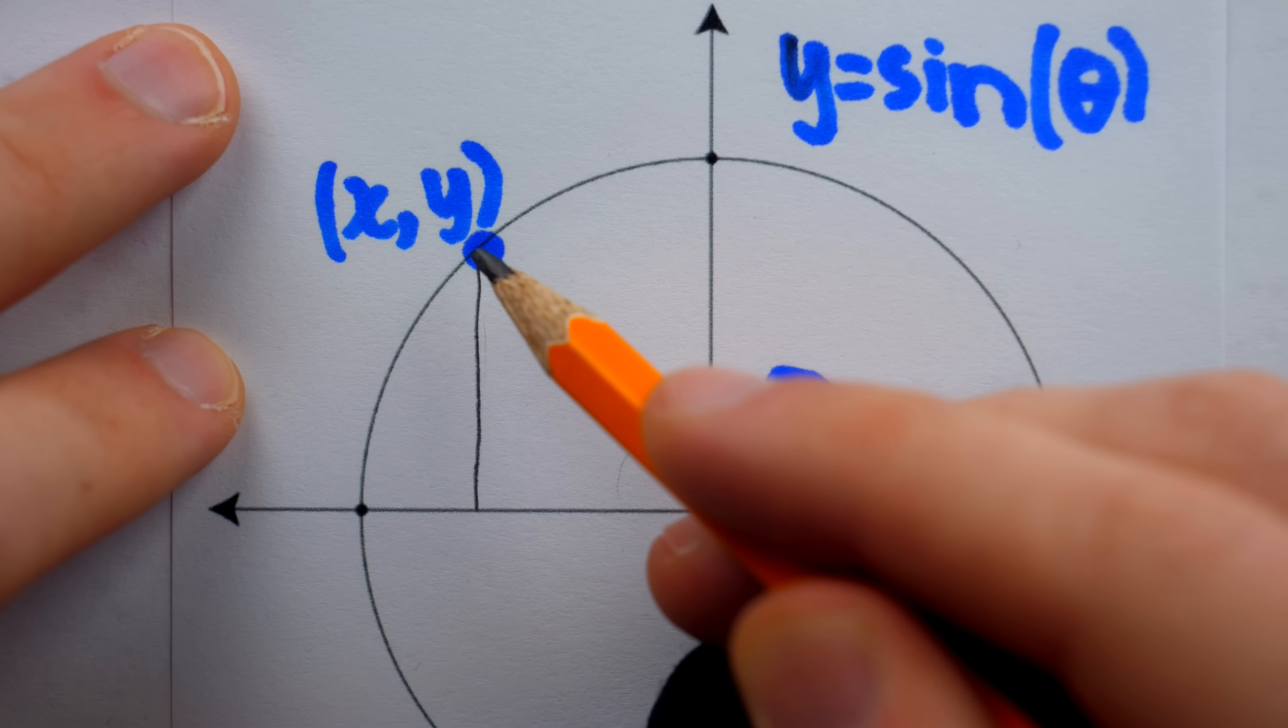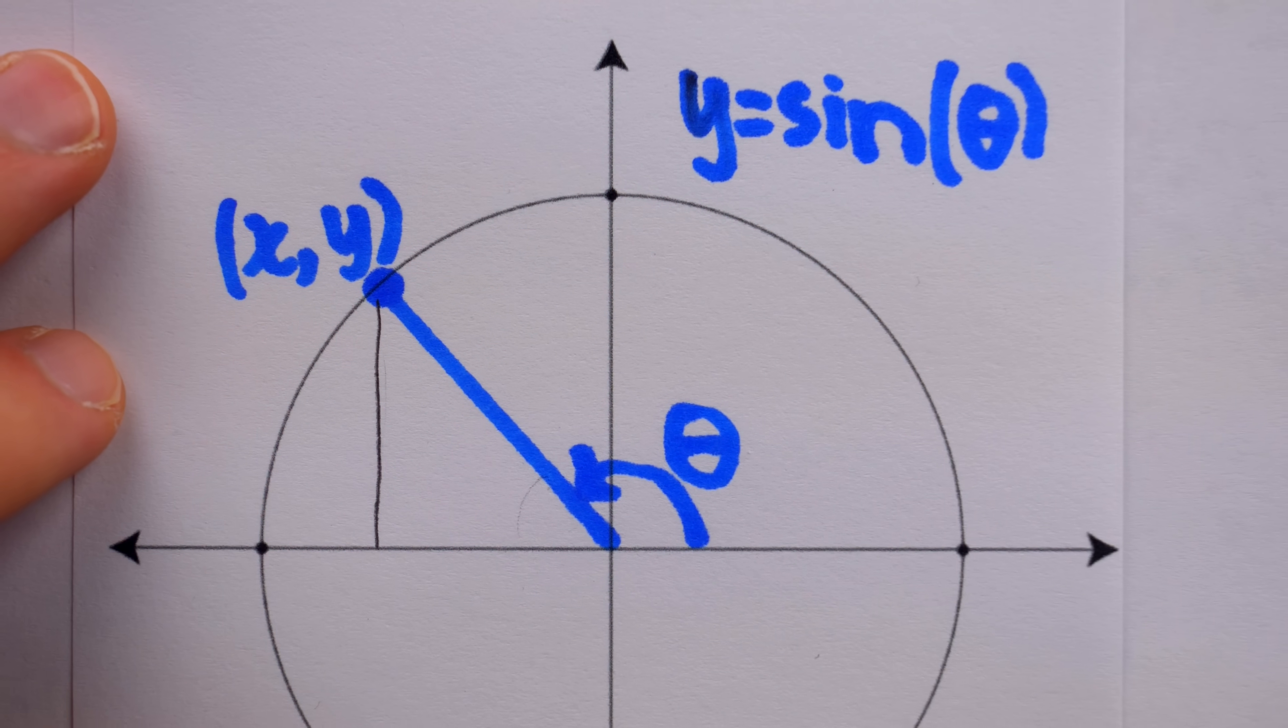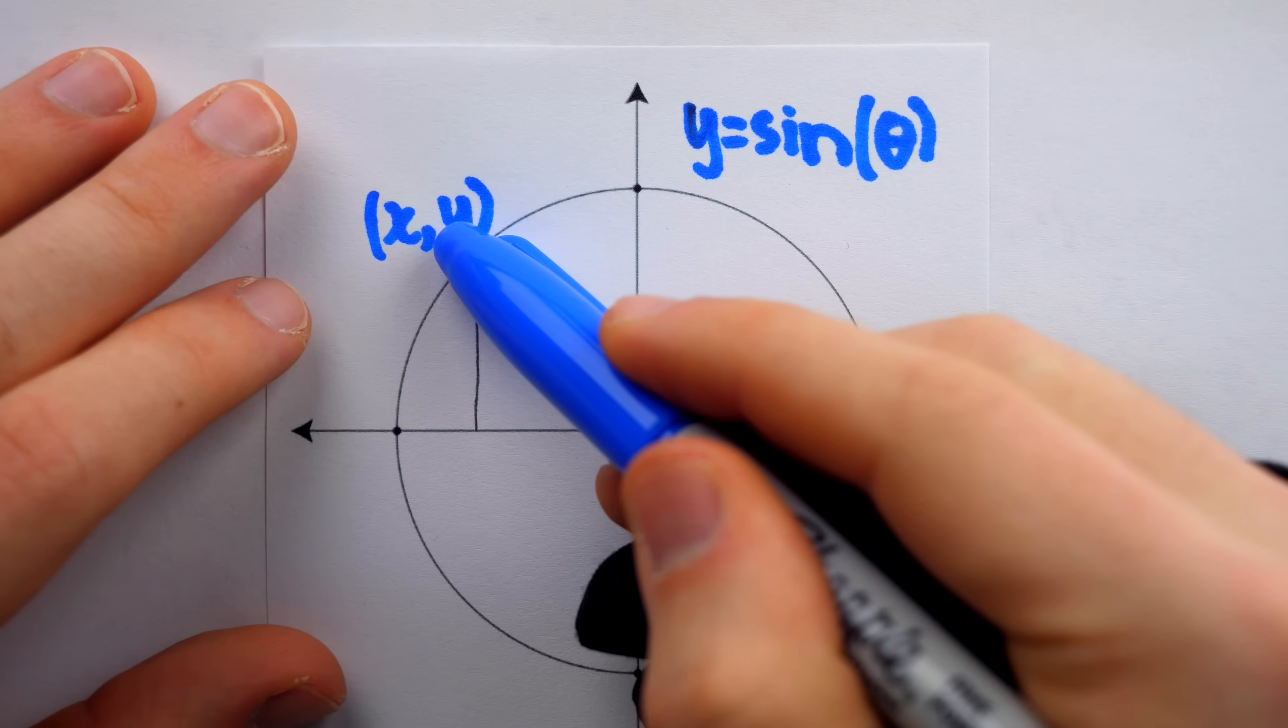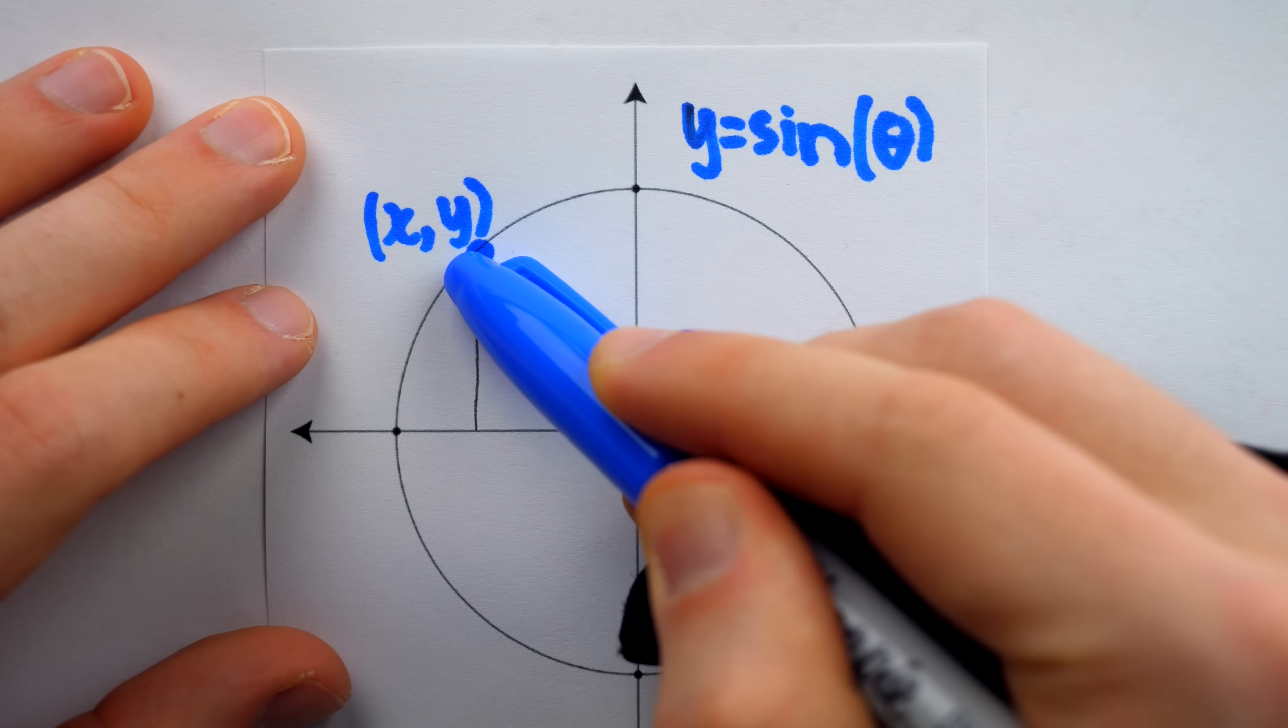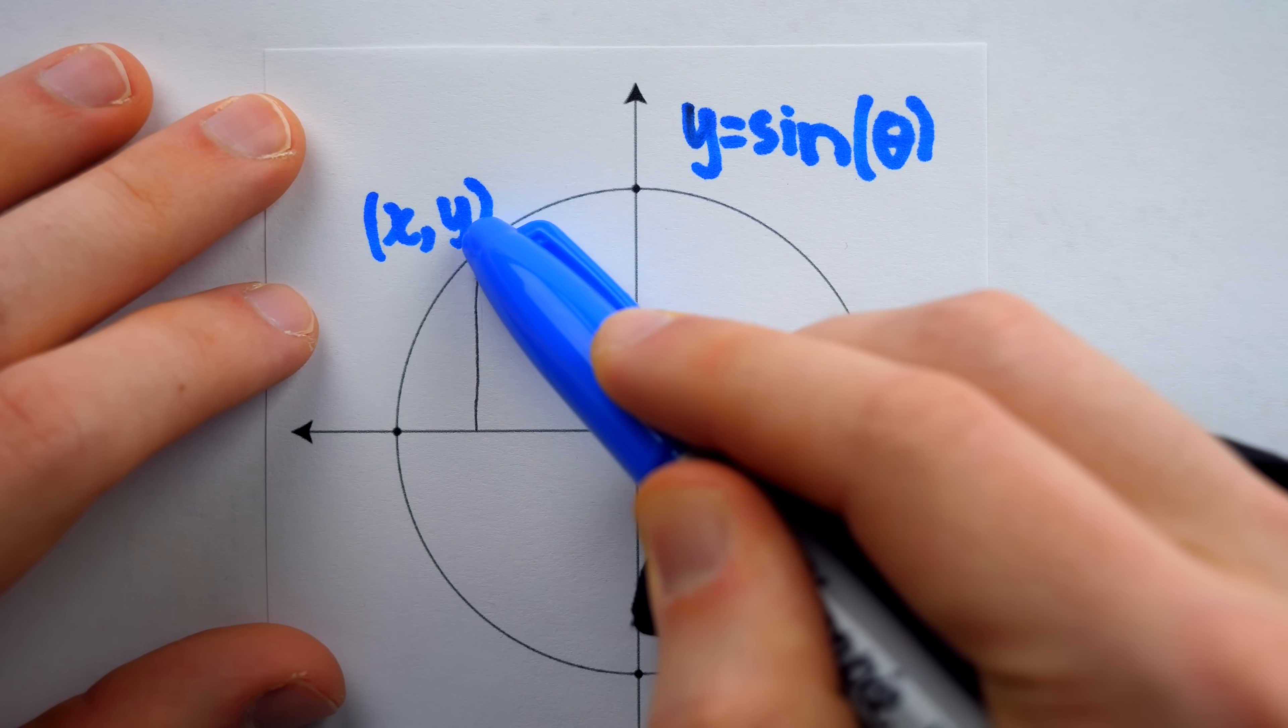So opposite over hypotenuse, that's y, that's sine of theta. And of course, as a result of this definition, after a full rotation, the sine values will repeat.